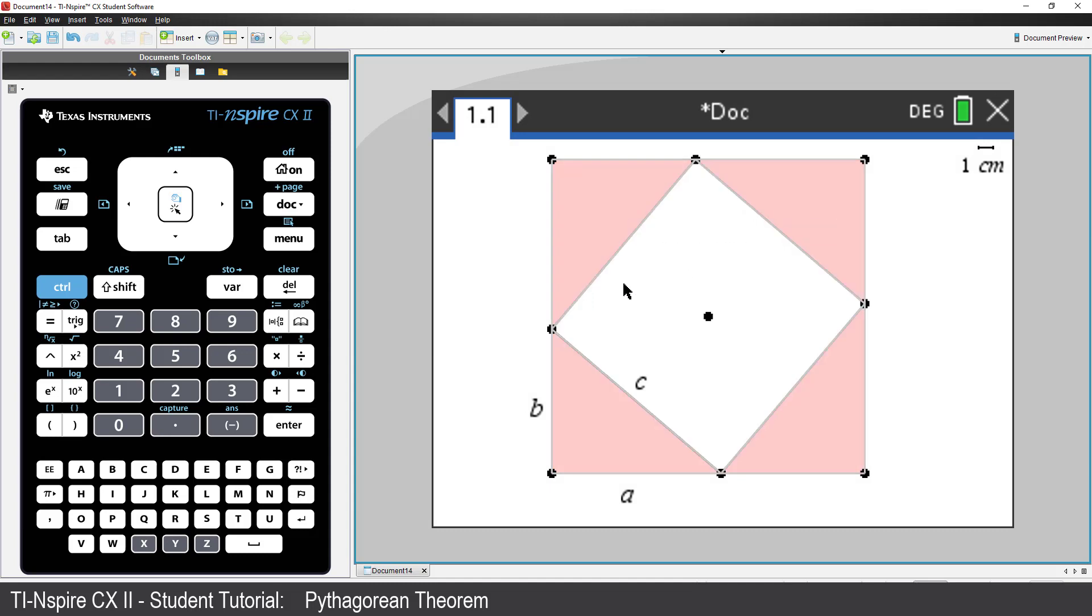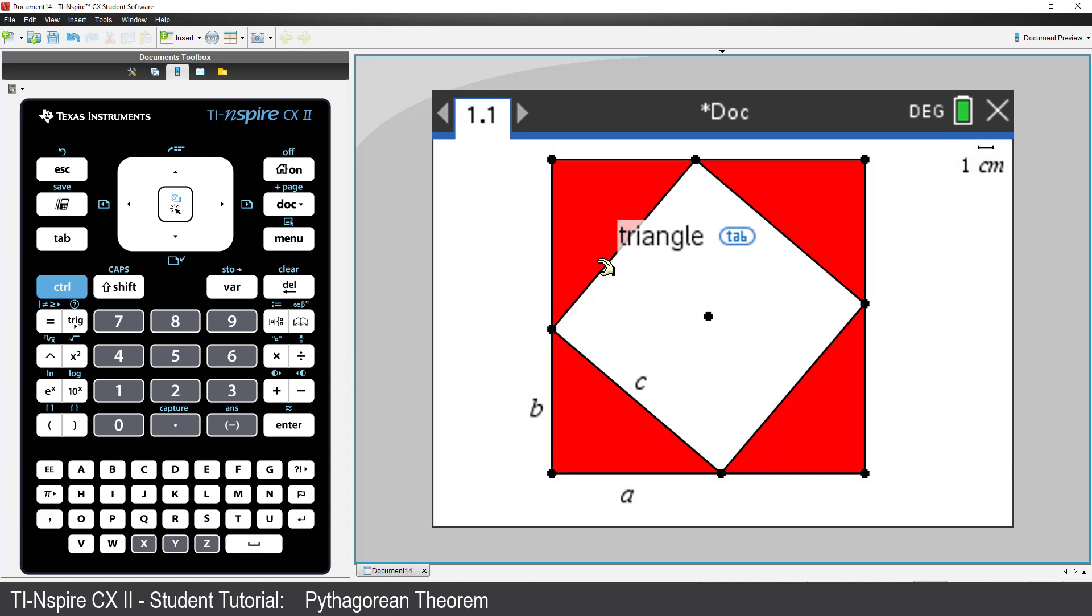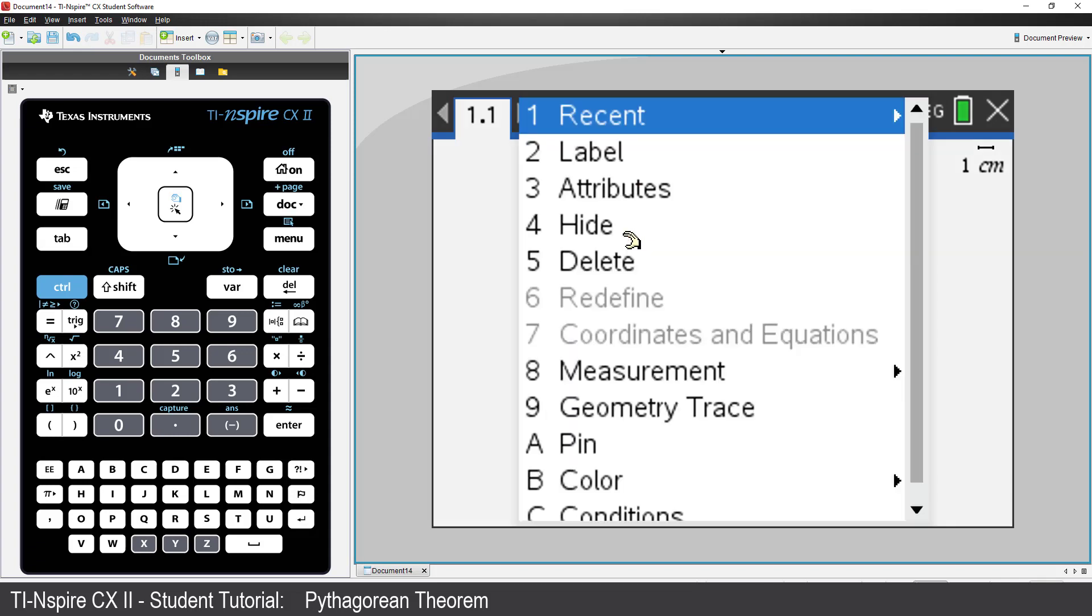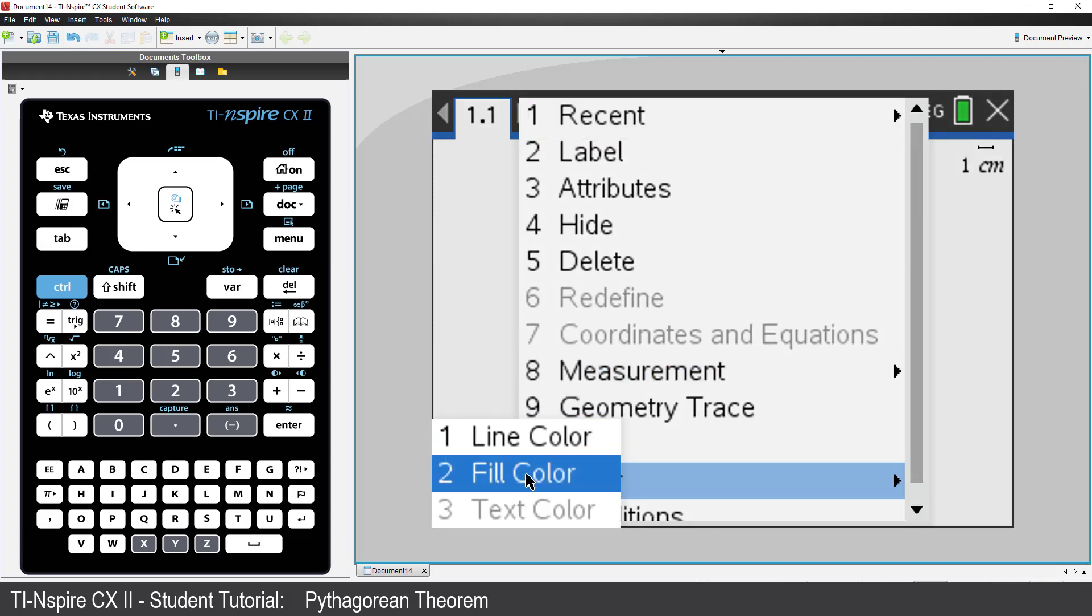Now colour the centre square, but make that a different colour. Notice that my tooltip says Triangle, so I'll need to press Tab. Now that Square is displayed, I'll press Control followed by Menu, then colour and fill colour.